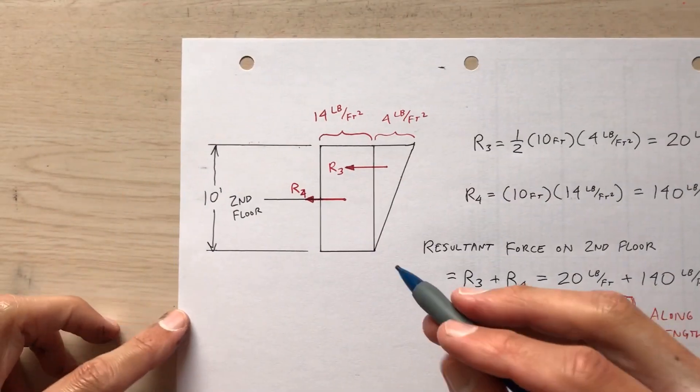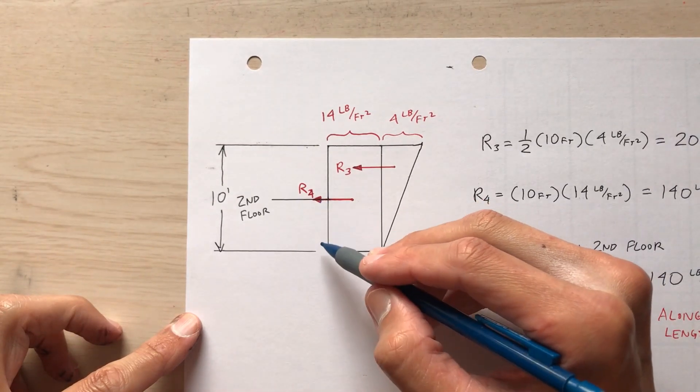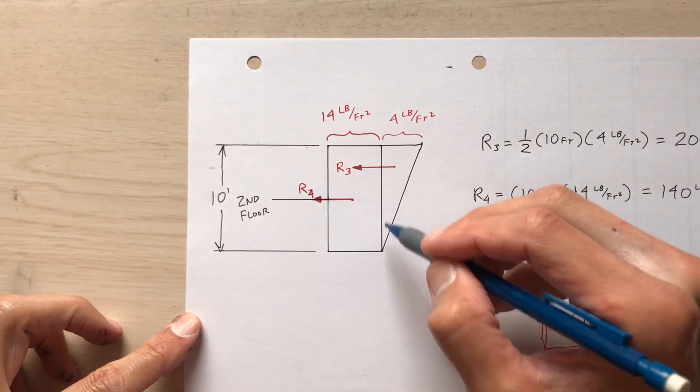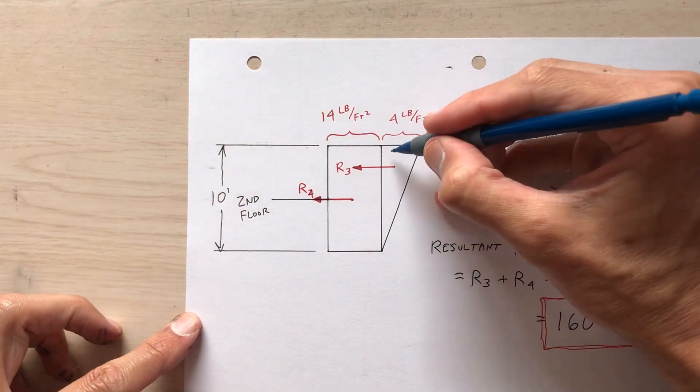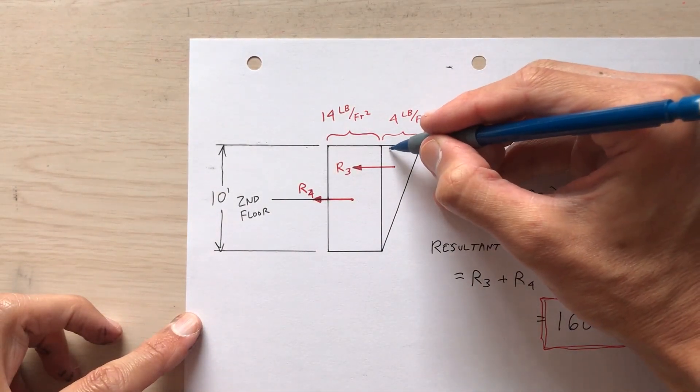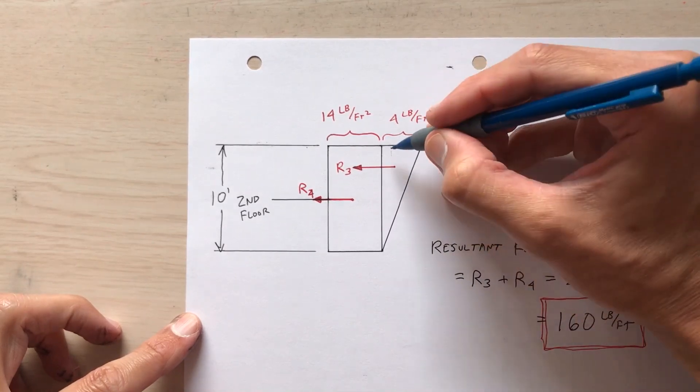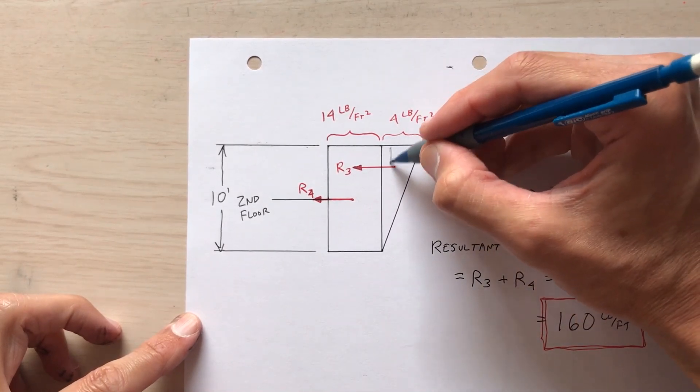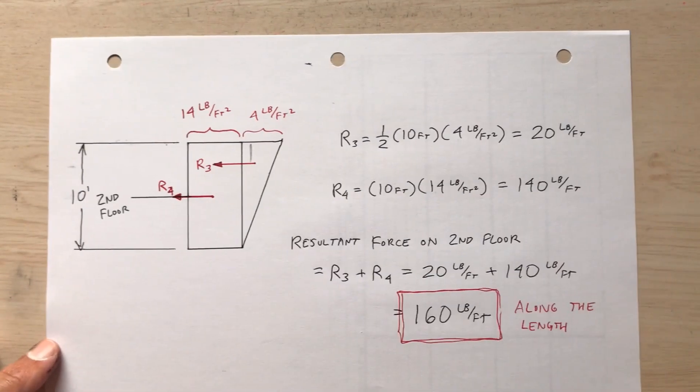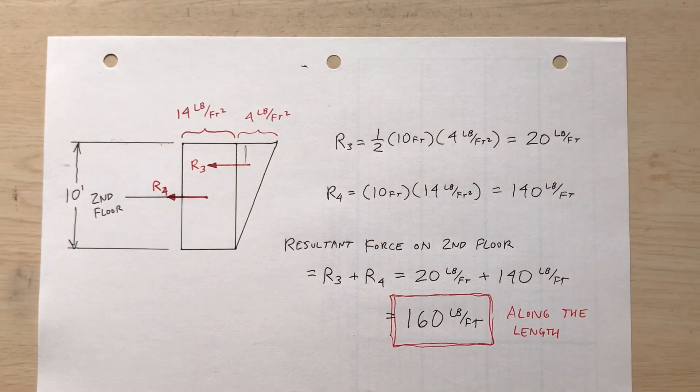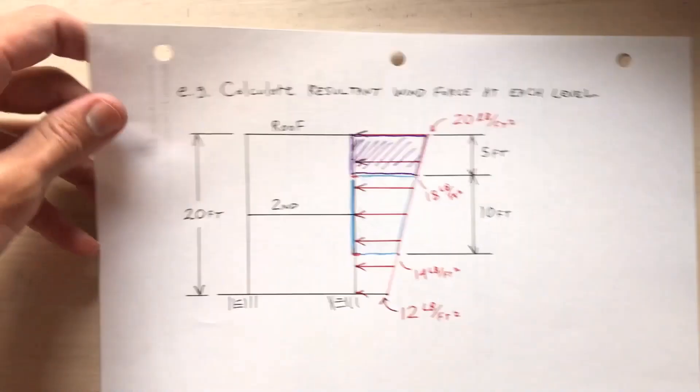Notice that where the resultants act. So r sub four is five feet up, but r sub three would be farther than that. I remember that the centroid of a triangle, one third away from the taller side. So this dimension in here, that'd be one third of 10 or three point three, three feet approximately. So now I know the resultant load on the second floor, and I know the resultant load on the roof.